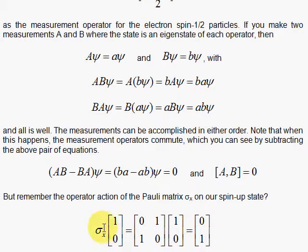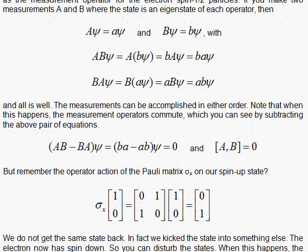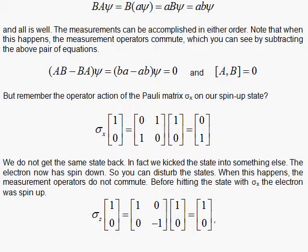So, if you try making a measurement here with this operator, I don't get the same thing back. I'm in trouble. So, comparing that with the Z measurement, if we make the measurement of the spin-up state, we get 1 for the eigenvalue, and the state is up. But if we apply the X next, we will destroy this state. We'll get something else. We'll knock it down.